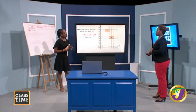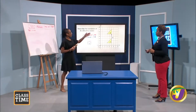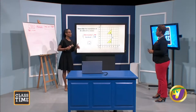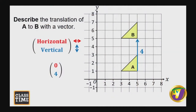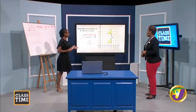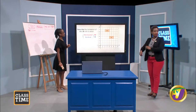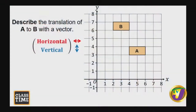Wait — looking more carefully, there's actually no horizontal movement. The horizontal movement is zero, and the vertical movement is four units upward. So the translation vector is 0, 4. We have to pay attention and look carefully. And in looking at this translation, the size and orientation of the shape do not change — it doesn't get smaller or larger, it keeps the integrity of the original object.